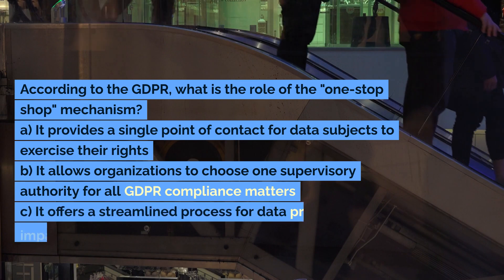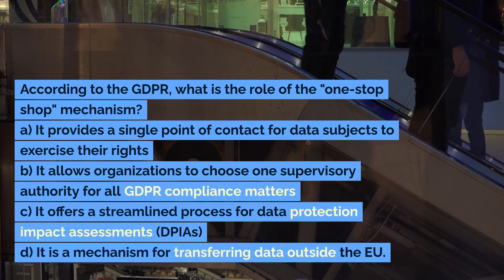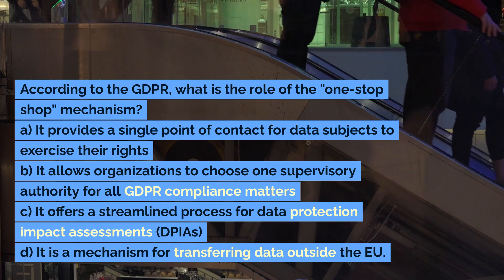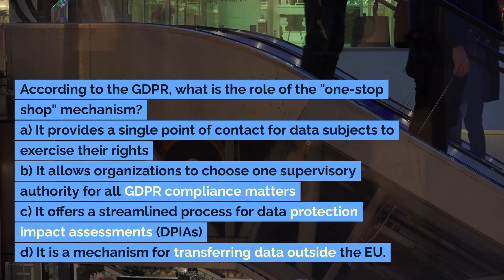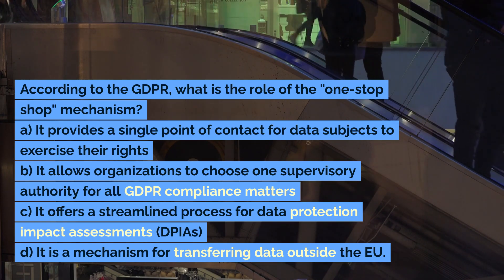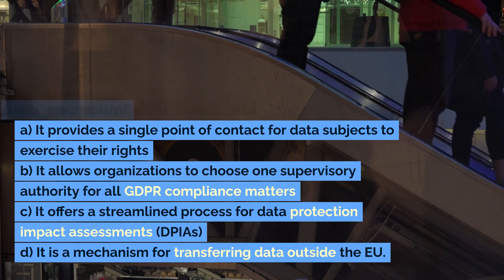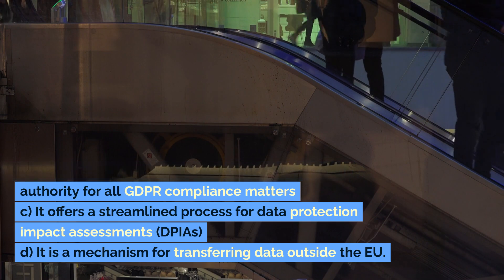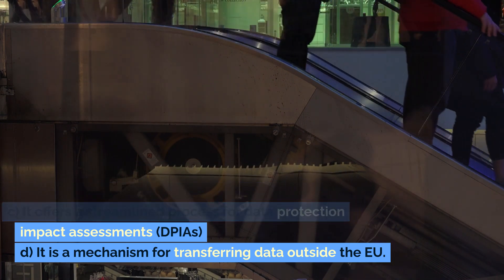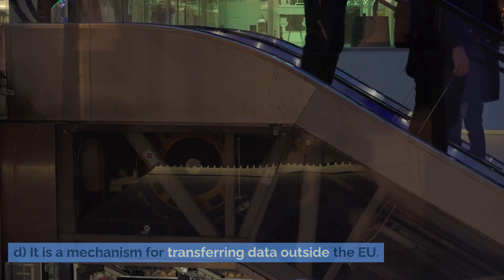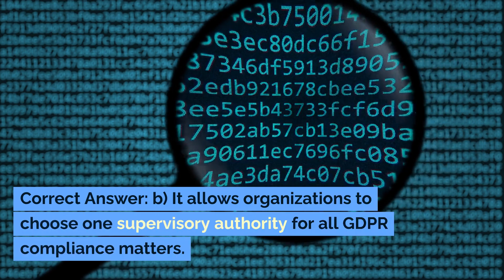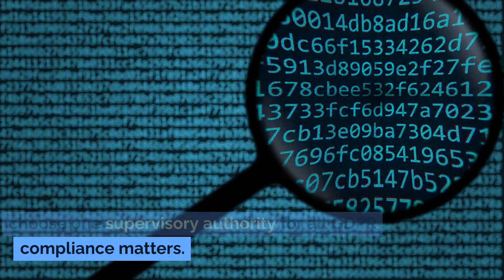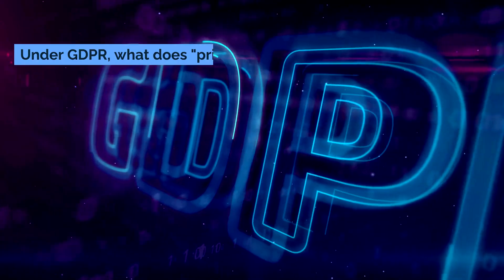According to the GDPR, what is the role of the one-stop-shop mechanism? A. It provides a single point of contact for data subjects to exercise their rights. B. It allows organizations to choose one supervisory authority for all GDPR compliance matters. C. It offers a streamlined process for data protection impact assessments (DPIAs). D. It is a mechanism for transferring data outside the EU. Correct answer: B. It allows organizations to choose one supervisory authority for all GDPR compliance matters.